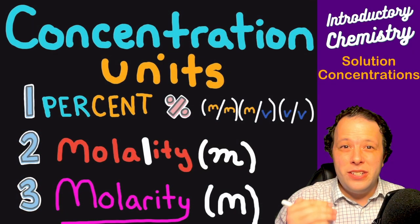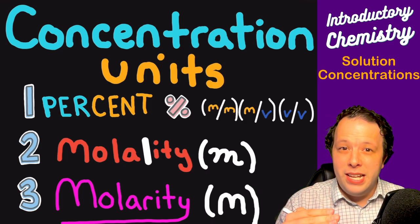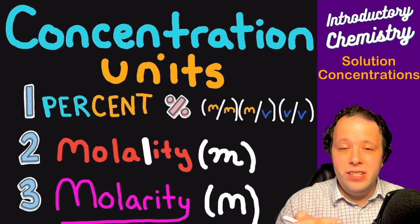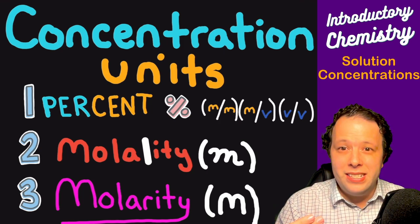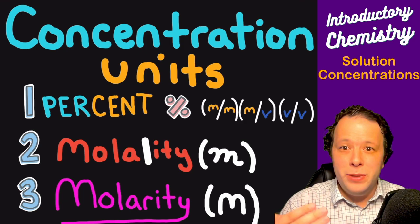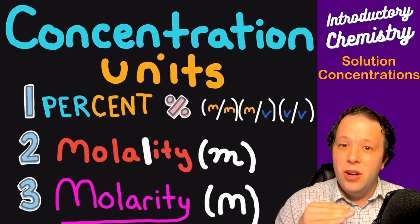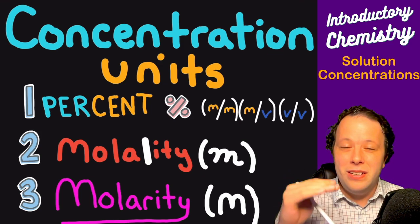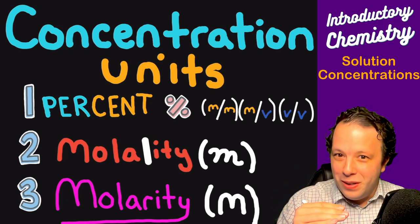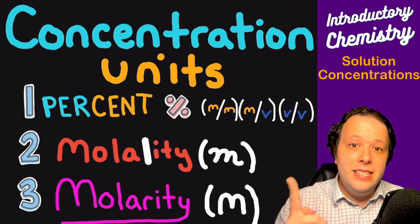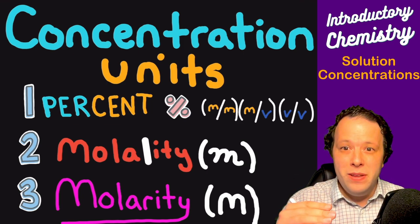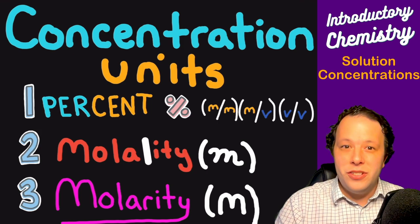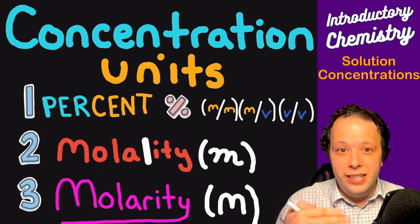With concentration, there are three major units. First, there are percents — always the part over the whole. When it comes to a percent solution, we can represent this a few different ways. Being that a percent is out of 100, it could be mass of the solute over mass of the solution, mass of the solute over volume of the solution, or volume of the solute over volume of the solution. In this video, we'll focus on mass over mass, and also do one example of mass over volume.